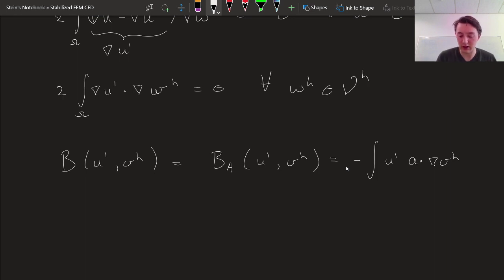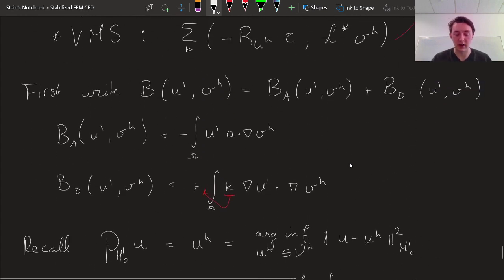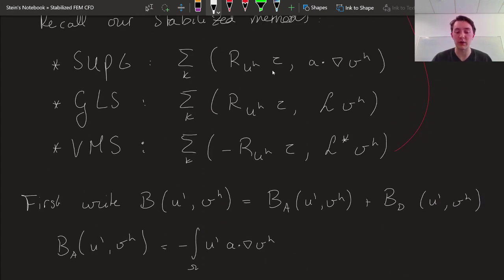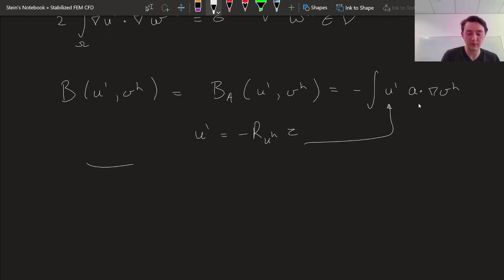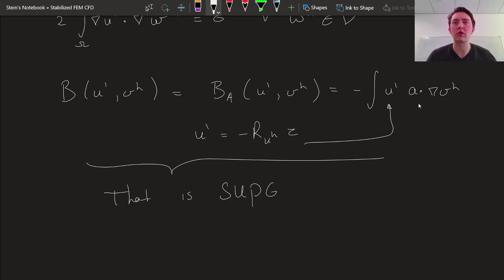And if we then substitute our model, U' is equal to minus the residual times tau in there, well, that is precisely how we obtain the SUPG method. Residual of the core skills times tau times A dot gradient of Vh. So that is SUPG. So now we understand that SUPG is pretty much the same thing, but with a different set of steps taken in the derivation.